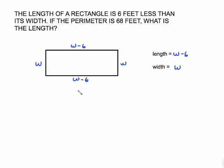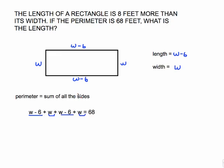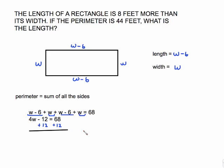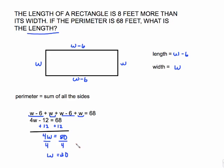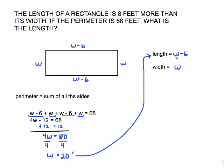Now write the equation by adding all sides equal to 68: (W minus 6) plus W plus (W minus 6) plus W equals 68. Combine like terms: 4W minus 12 equals 68, because negative 6 plus negative 6 is negative 12. Add 12 to both sides: 4W equals 80. Divide by 4: W equals 20 feet. That's the width. The length is 20 minus 6, which gives us 14 feet.